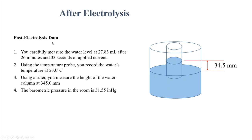After collecting approximately 20 mL of gas, measure the new water level: 27.83 mL. The difference between 48.3 and 27.83 mL gives the volume of hydrogen gas produced. We also record the time elapsed: 26 minutes and 33 seconds of applied current. Remember to convert time to seconds when calculating charge using Q = I × t.